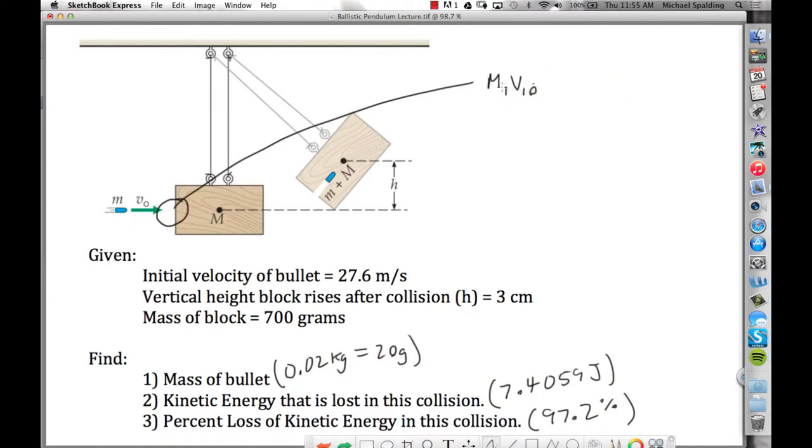Okay, so all we start with, talking in terms of momentum, all we have initially is the momentum of the bullet, and what's that going to be equal to? It's going to be equal to the momentum of the bullet final, which is M1V1 final, plus the final momentum of the block, which is M2V2 final.